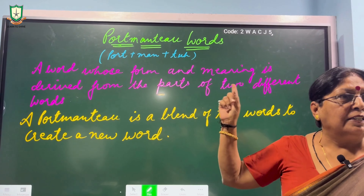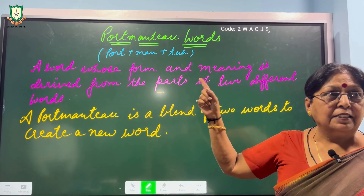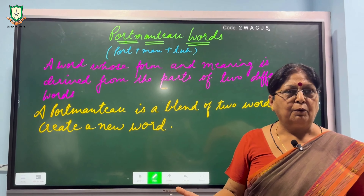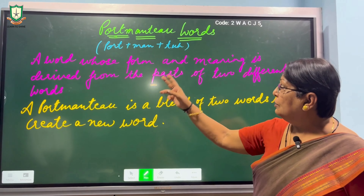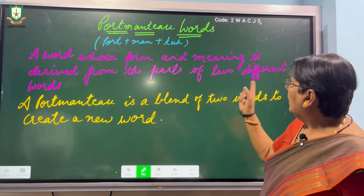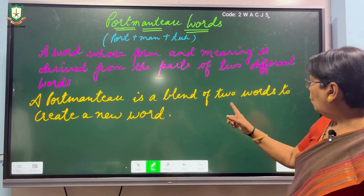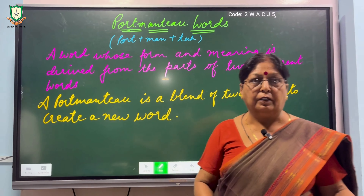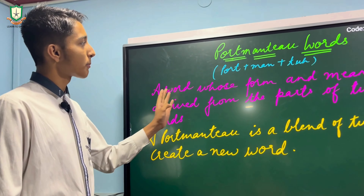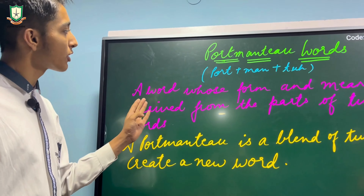Hello, good morning dear children! We are back again with yet another informative video, and this is on portmanteau words. What are portmanteau words? Let me explain. A word whose form and meaning is derived from the parts of two different words is known as a portmanteau word. Simply put, a portmanteau is a blend of two words to create a new word.